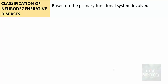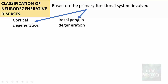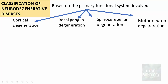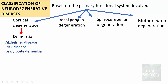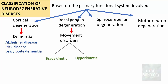How do we classify neurodegenerative diseases? The classification is based on the primary functional system involved. It can be cortical degeneration, degeneration of the basal ganglia, spinocerebellar degeneration, or motor neuron degeneration. Cortical neurodegeneration usually manifests as dementia, with common examples including Alzheimer's disease, Pick disease, and Lewy body dementia. Basal ganglia degeneration manifests as movement disorders, which can be further categorized into bradykinetic or hyperkinetic types.